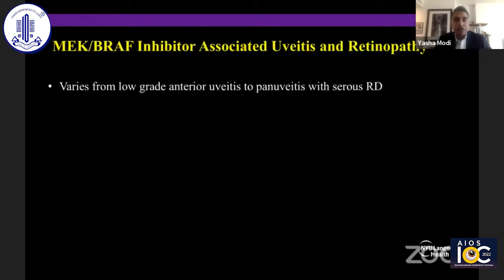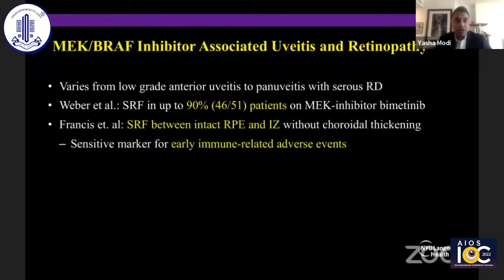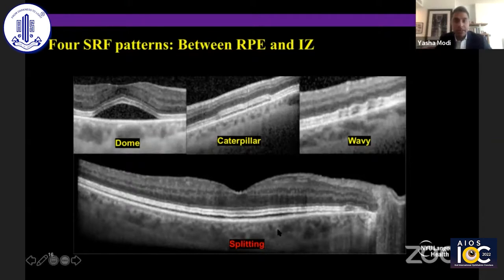MEK and BRAF inhibition-associated uveitis and retinitis varies from low-grade anterior uveitis to a pan-uveitis with serous retinal detachments. The vast majority of individuals will have some pockets of subretinal fluid. This was further characterized by Jasmine Francis at Memorial Sloan Kettering in New York, who identified that subretinal fluid between the intact RPE and IZ occurs without associated choroidal thickening, and may serve as a sensitive marker for early immune-related adverse events. These are the four patterns described — notice the bottom pattern, eerily similar to what our patient looked like at presentation.